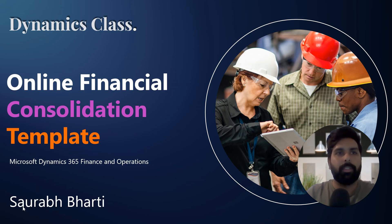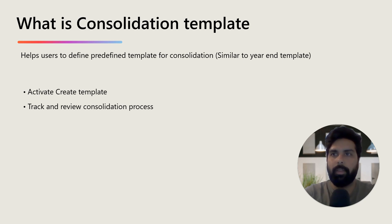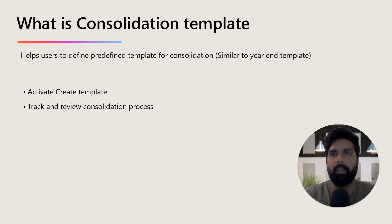The consolidation template helps users define a predefined template for consolidation. If you have performed the year-end process, you would realize that there we also define a template where we select a list of legal entities for year-end close and a main account for balances. Similarly, in the consolidation process we need to select the list of legal entities, percentage, financial dimensions, currency exchange rate, and from which main account to which main account we are doing the consolidations.